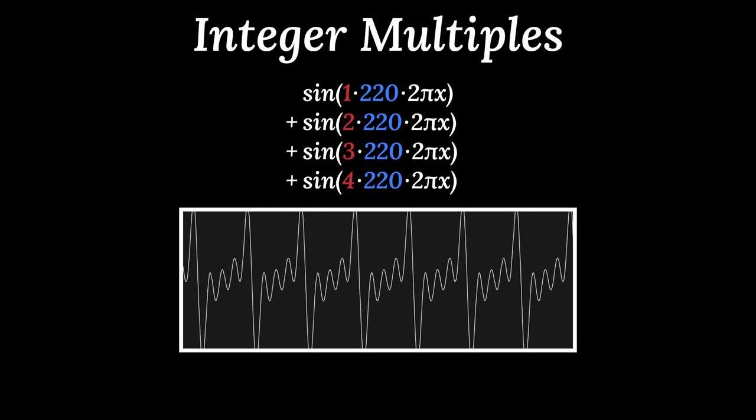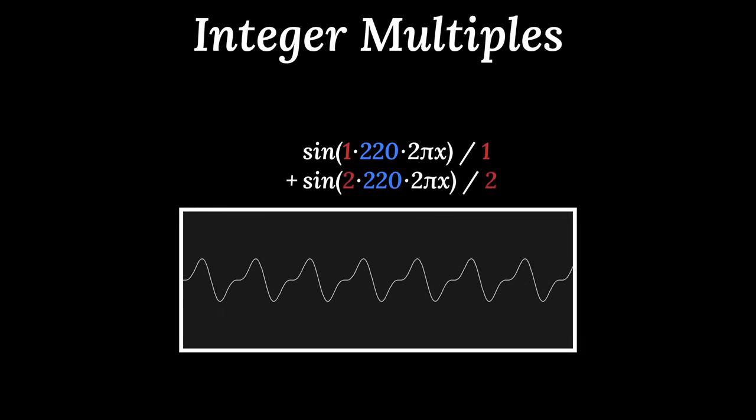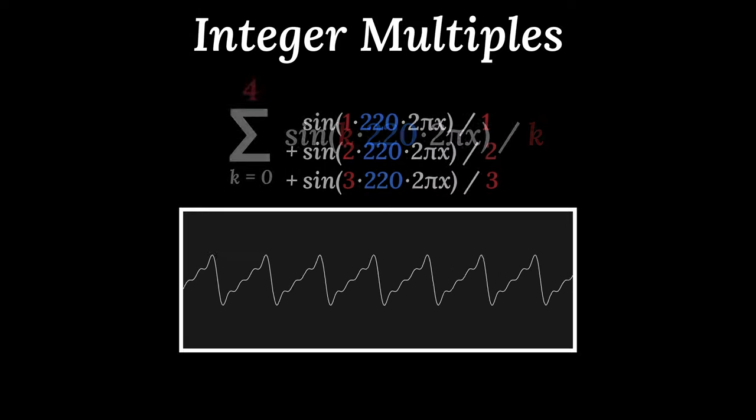Now the wave is too big to fit in our box. Let's try dividing the height of the nth wave by n. Back to 220 hertz, add a wave at double the frequency, but this time make the wave only half as tall. Add another wave at triple the frequency, but make it a third as tall. And so on.